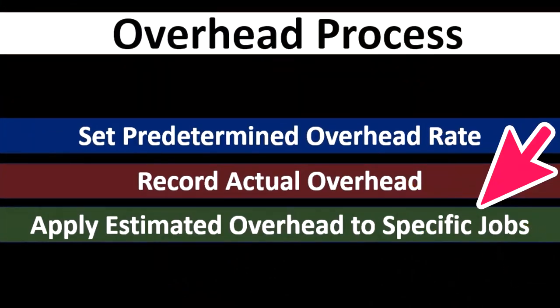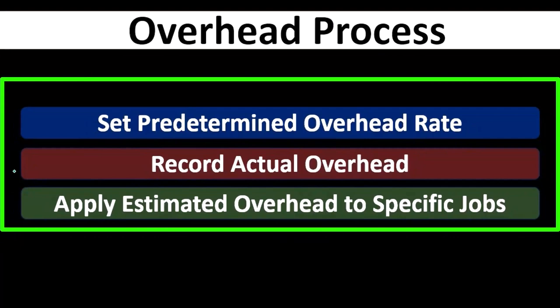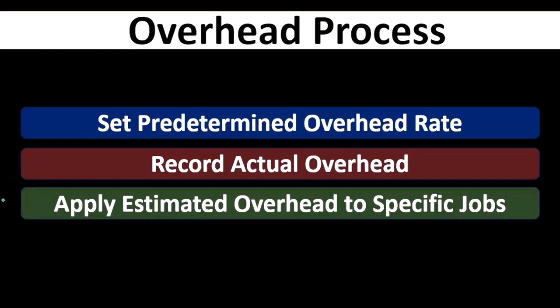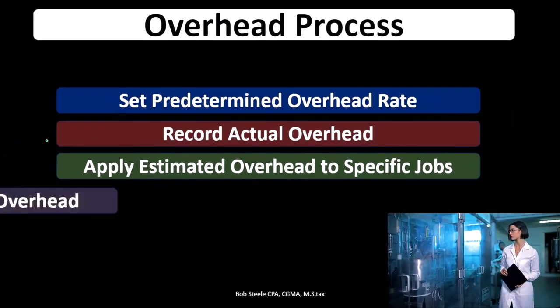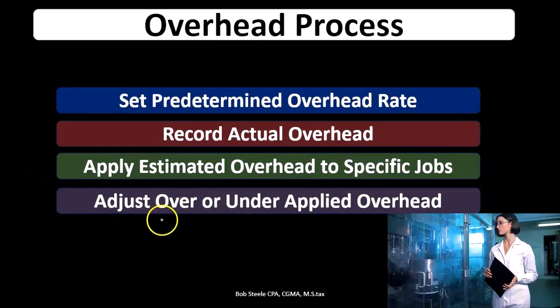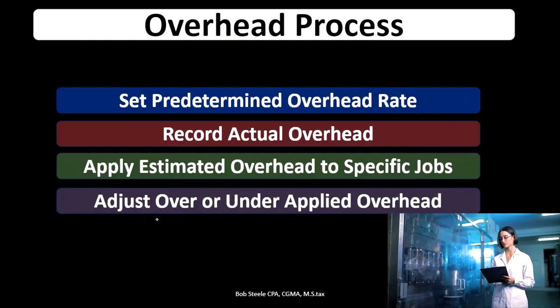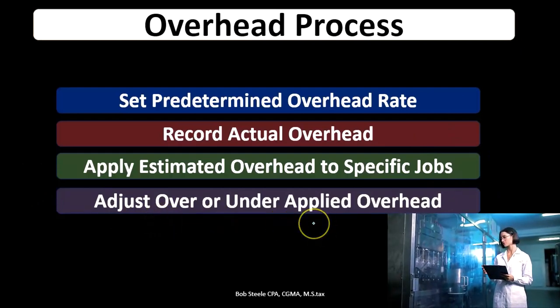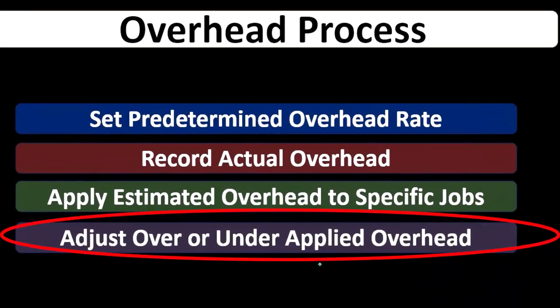Then we apply the estimated overhead to the jobs. Note that two things are happening simultaneously: we have the recorded overhead — the actual overhead — and we have the applied overhead. Because the applied overhead is an estimate, it's not going to match the recorded overhead. So we're going to have the problem of over or under applied overhead. Whatever the case, we have to deal with that over or under applied overhead by the end of the time period so that next month we start with zero.